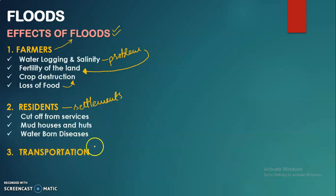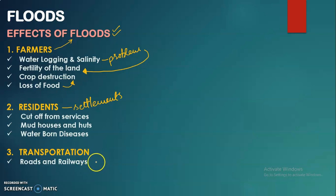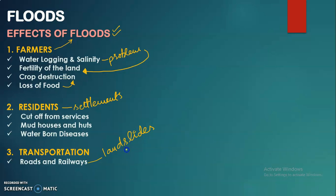Floods also damage transportation — roads and railways. As discussed previously, floods can cause landslides, especially in areas with deforestation where surface runoff is higher. Roads get blocked by landslides and railways are also affected, so the entire transportation system suffers because of floods.